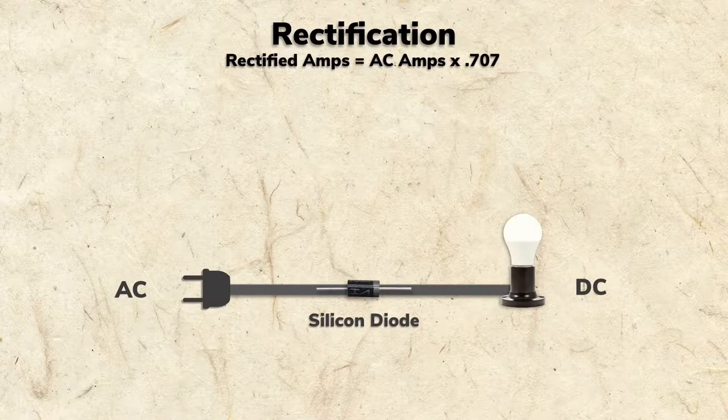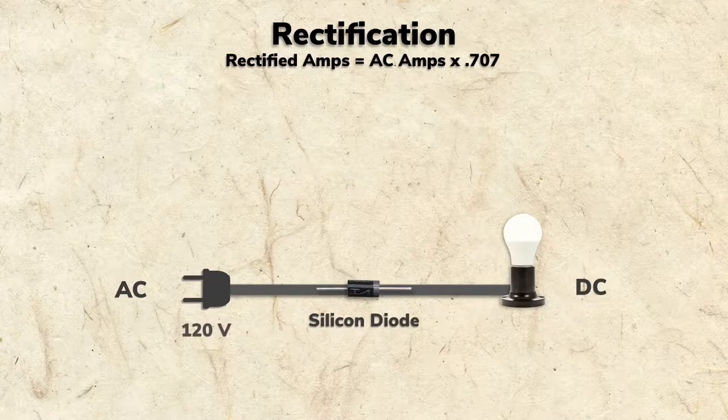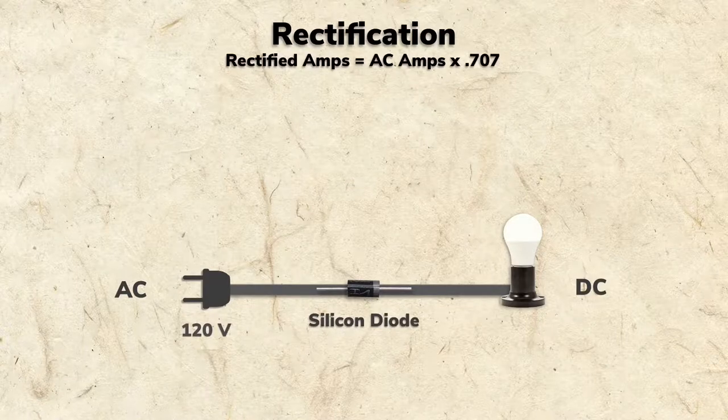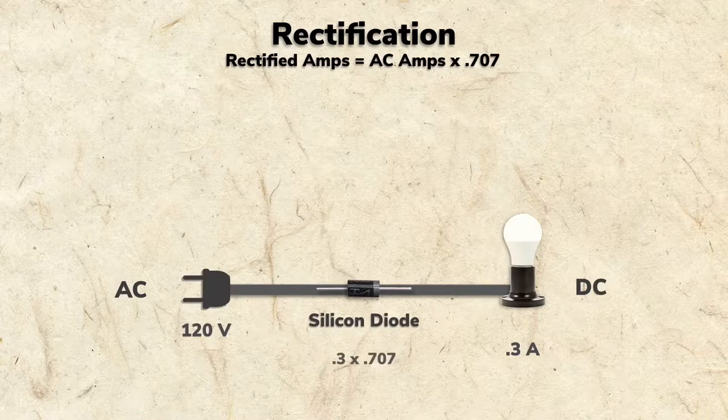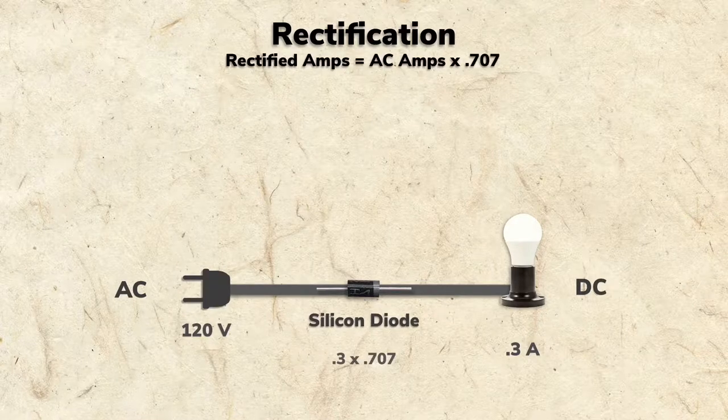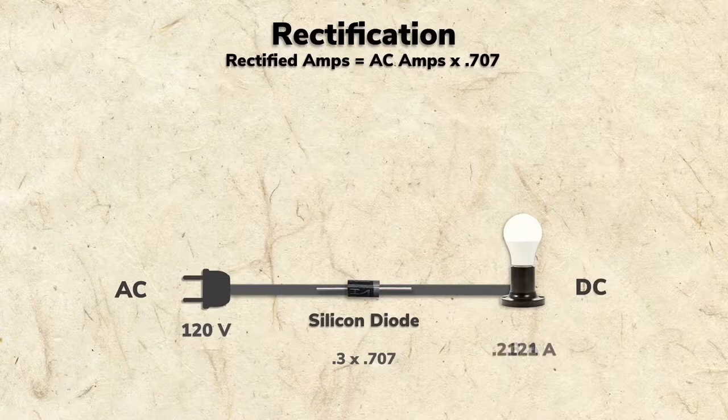The formula also works for amps. At 120 volts, the circuit which will connect to the diode will draw about 0.3 amps. If we multiply that times 0.707, we find that the rectified amperage draw will be 0.2121.